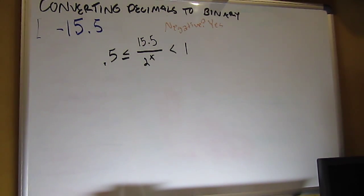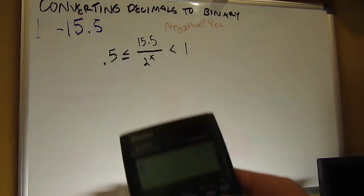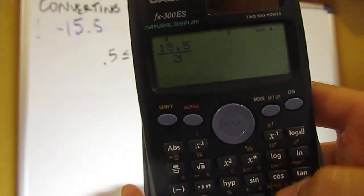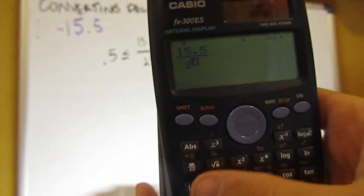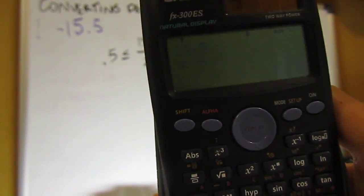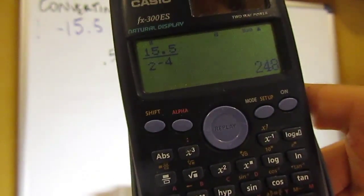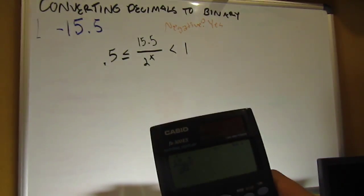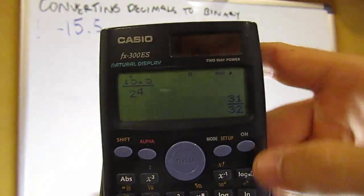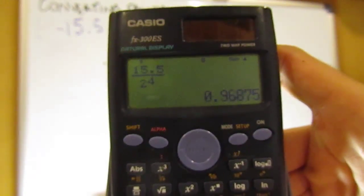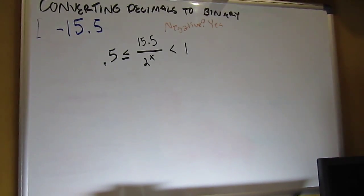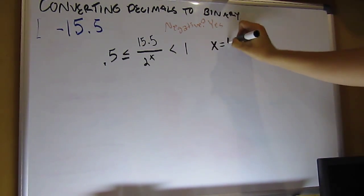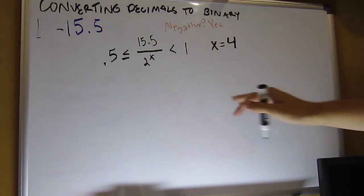So now we take our calculator out, and we plug in 15.5 over 2, and I'm sure there's a mathematical way to do this, but I just guess. I'll do 2 to the negative 4th first, and you see equals 248, well that's not exactly between 0.5 and 1. So we're going to come back here, and I'm just going to do positive 4, which is really the answer. And we get 31 over 32, which is really 0.96875. So that qualifies. So we know that's true, x is equal to 4, and actually I'm going to get to that part in a second.